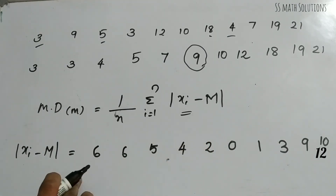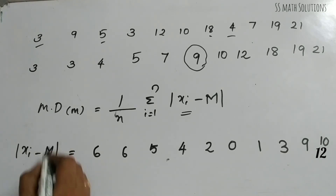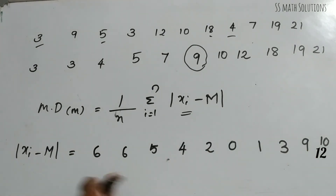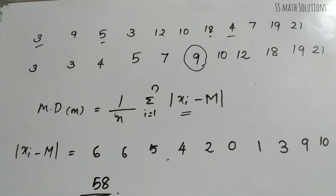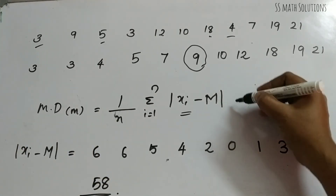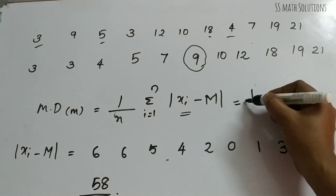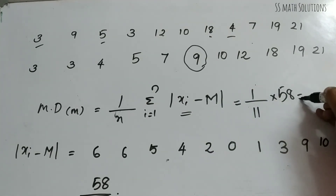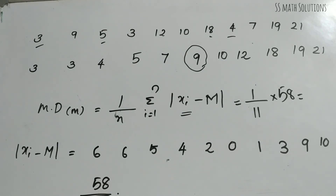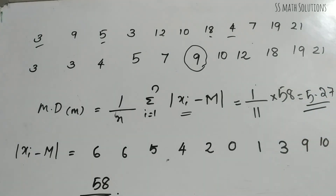The sum of all these deviations equals 58. So mean deviation = (1/11) × 58 = 58/11 = 5.27. So the mean deviation about the median for this data is 5.27.